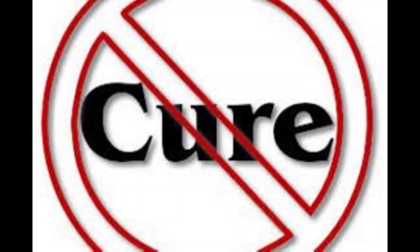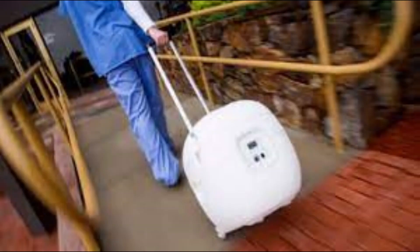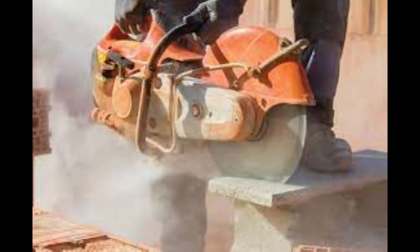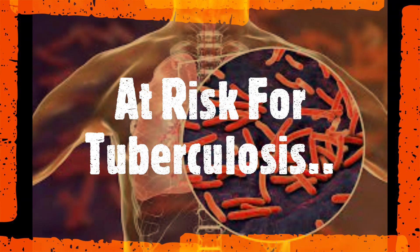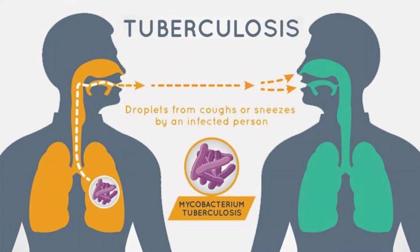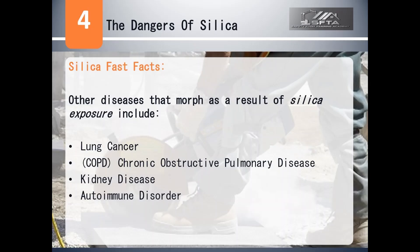Sadly, there is no cure for silicosis, and it could even require a lung transplant. Workers who have been exposed to silica and those who have silicosis are also at increased risk of tuberculosis, which is a contagious and potentially life-threatening infection. Other diseases that develop as a result of silica exposure include lung cancer, chronic obstructive pulmonary disease (COPD), kidney disease, or an autoimmune disorder.